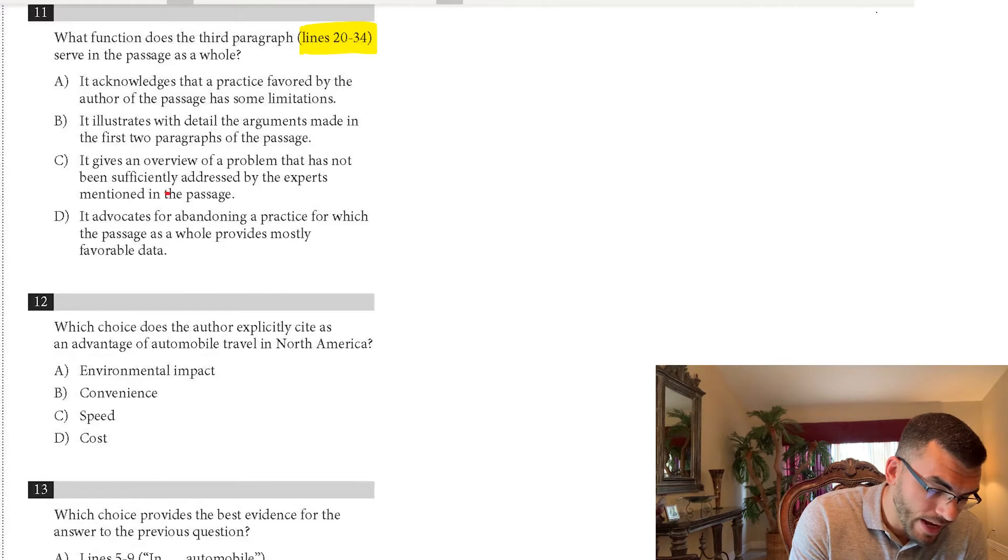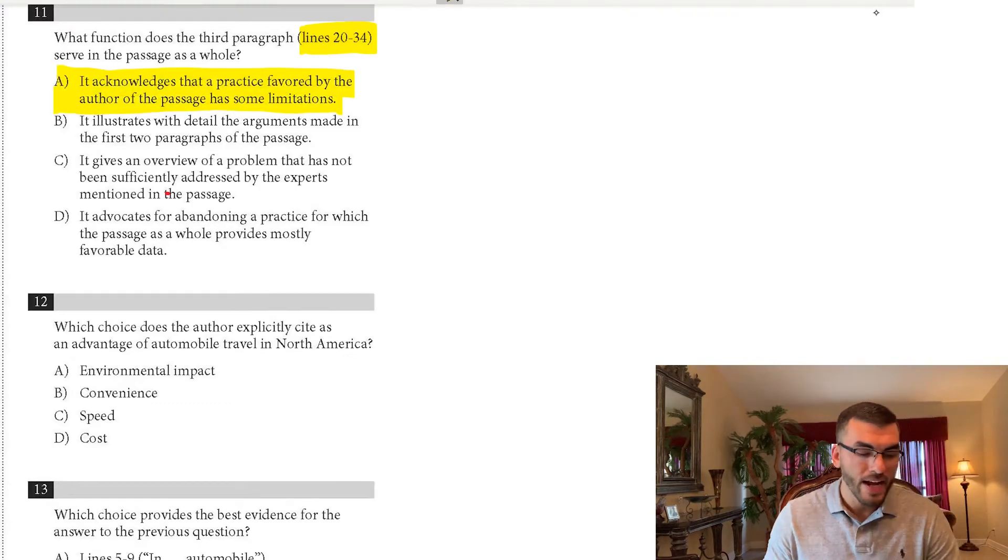And the correct answer is A. It acknowledges that a practice favored by the author, which is public transportation, does have some limitations. So there are some limitations to public transportation. That's what that third paragraph served to the passage as a whole. Again, if you couldn't figure that out with everything you've gathered on your own, give it your best educated guess and move on.